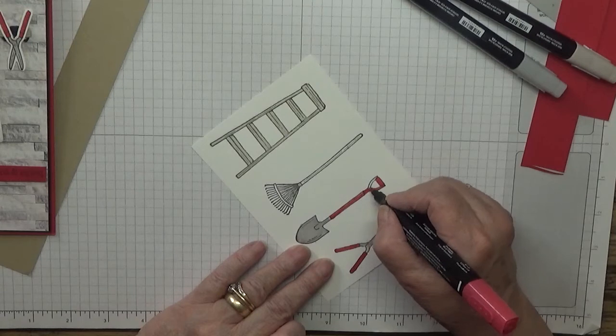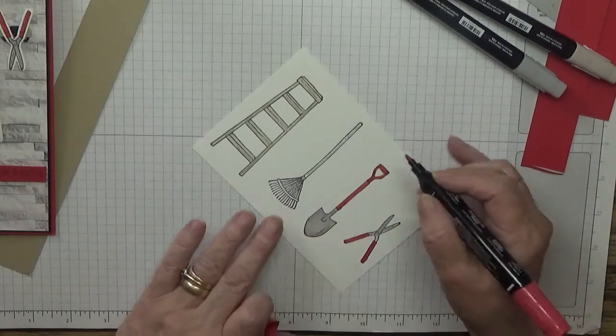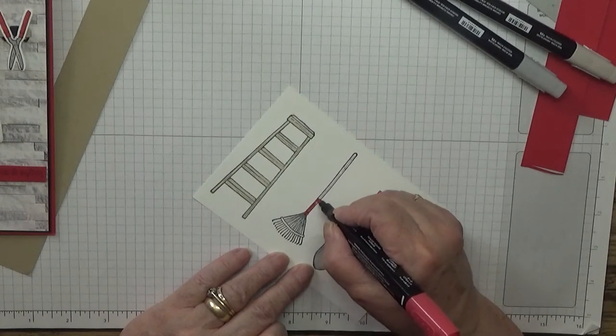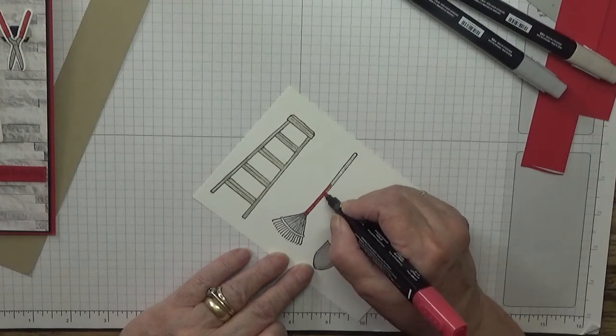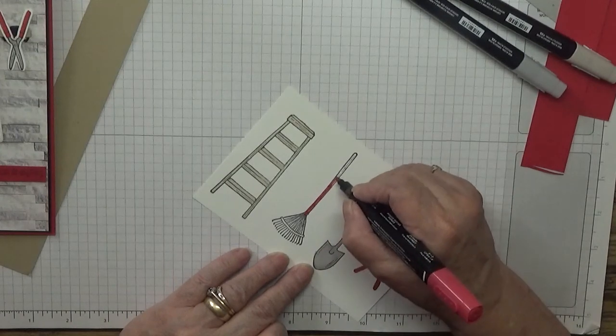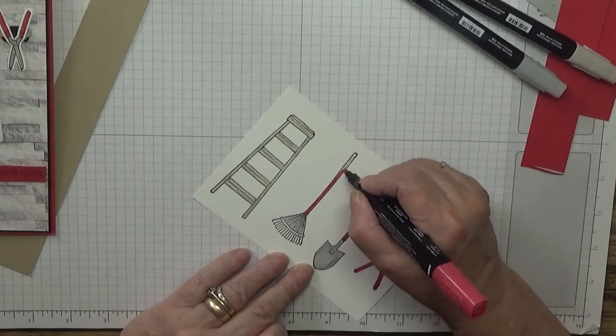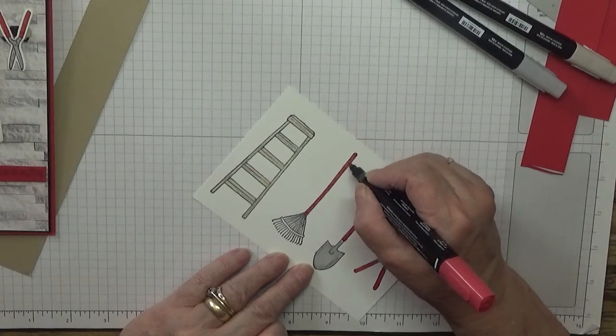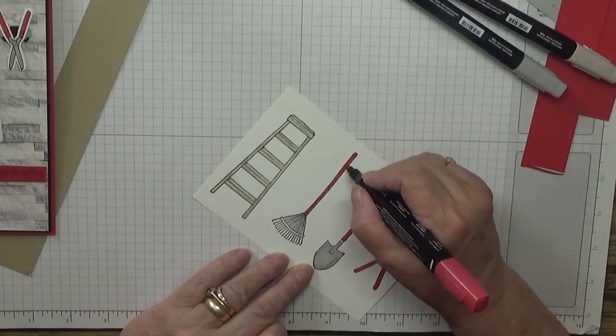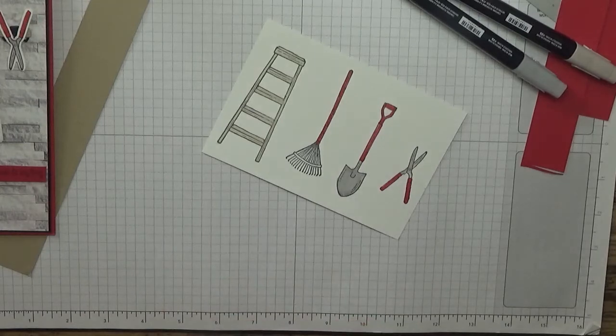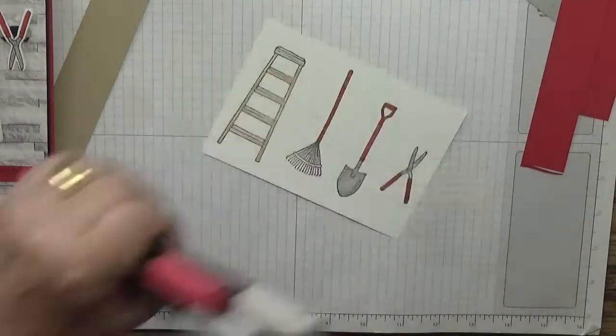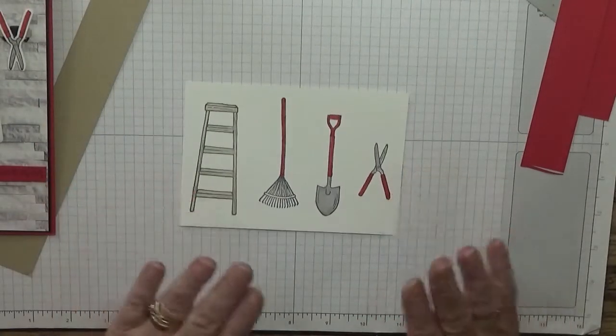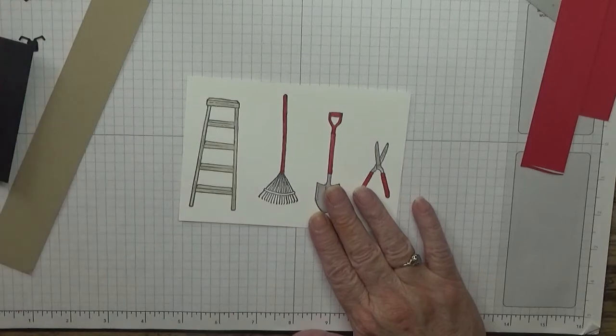I think this handle should have been a different color, but never mind. That's all our quick coloring done. Now what we've got to do is cut these out.